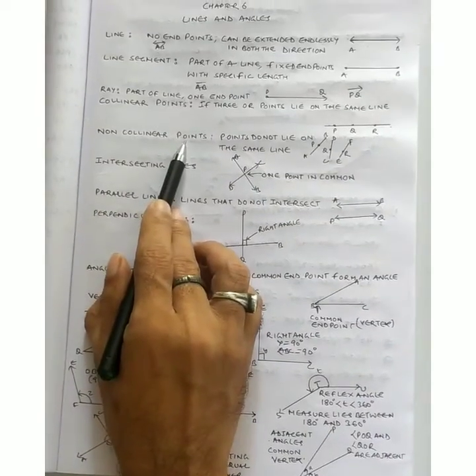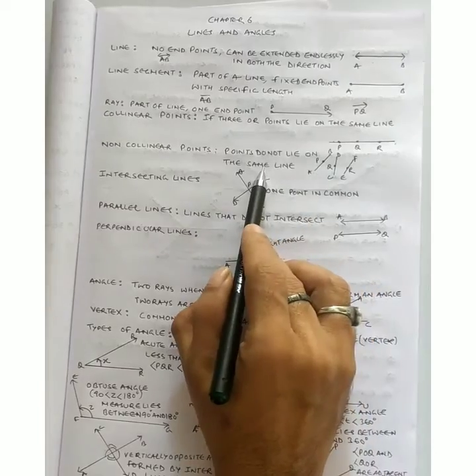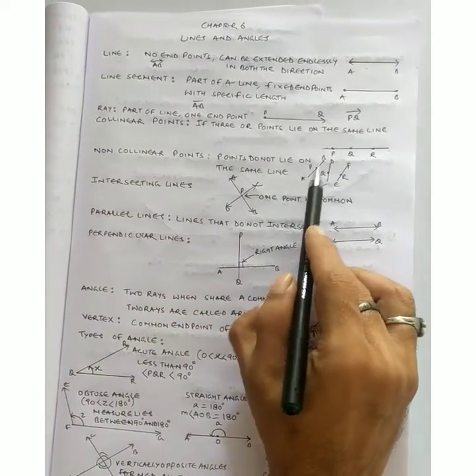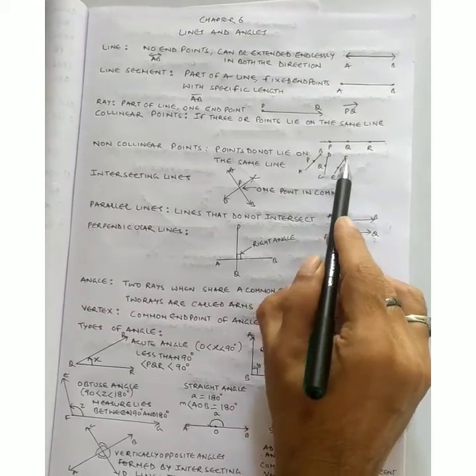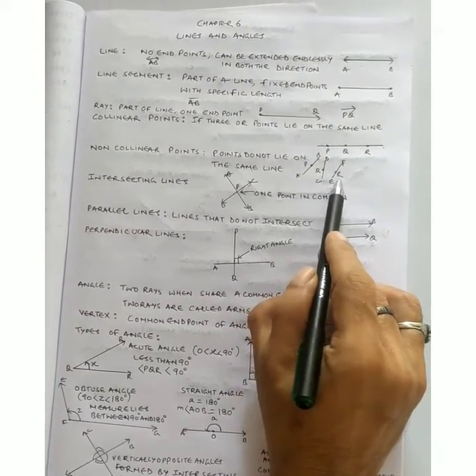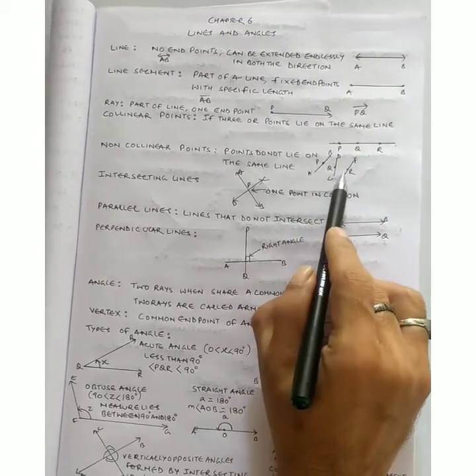Now, non-collinear points. Those points which do not lie on the same line. Now let us see. AB is point P, CD is Q, EF is R. They are not lying on the same line. Thus, they are non-collinear points.